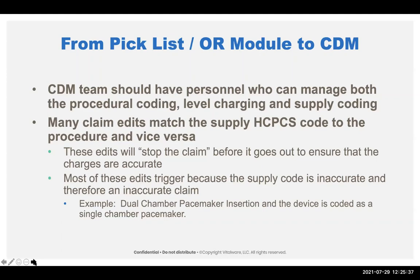Many claim edits match the supply HCPCS code. For example, Revenue Guardian and Vital Integrity edits will stop the claim before it goes out and say: you have a C1776 joint implant on this claim but no procedure, or you have a procedure for a hip joint replacement and no C1776. We're starting to see artificial intelligence rules built of A to B or one-to-many to catch this. Most of these trigger because the supply coding was done inaccurately. I have frequently seen a single-chamber pacemaker come across on the bill because of the code when they actually put in a dual-chamber rate-responsive, because the CDM mapping was outdated.